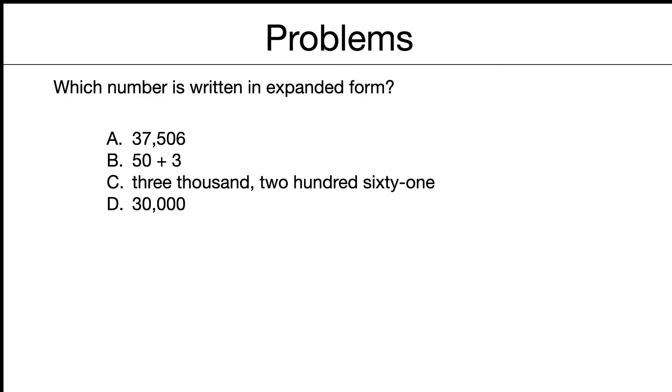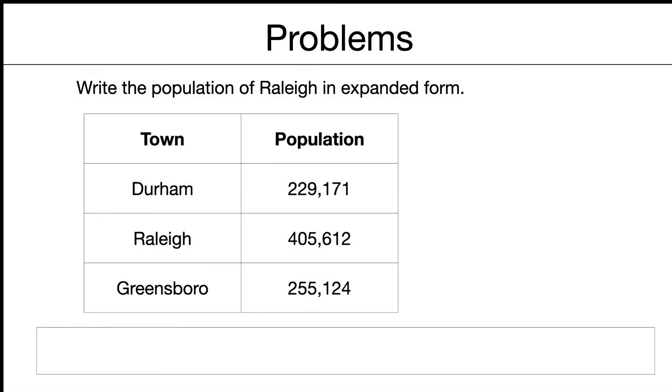Which number is written in expanded form? Pause if you like. Well, it's not going to be A. That's standard form. C is in word form. And D is also in standard form. So the answer is going to be B. Even though that's only a two-digit answer, it's still in expanded form.